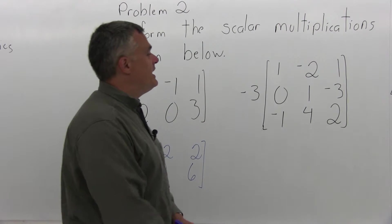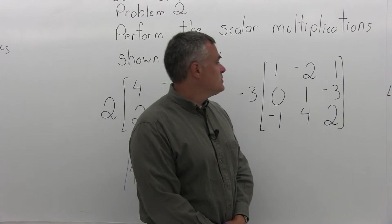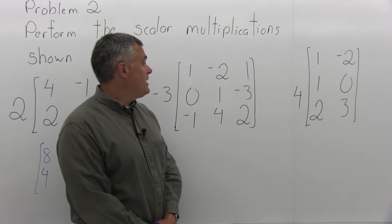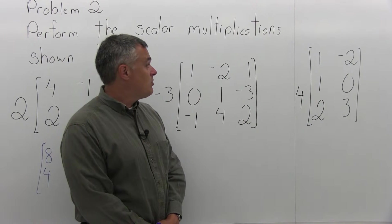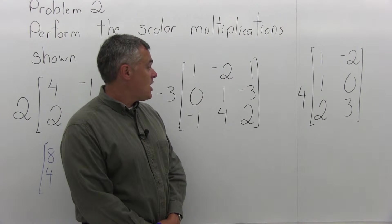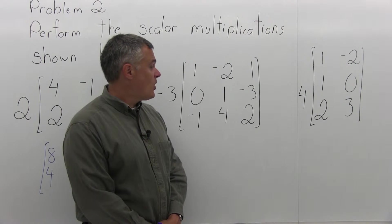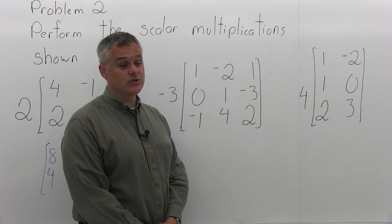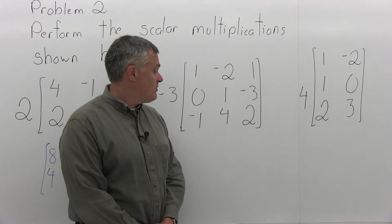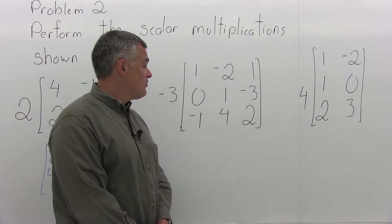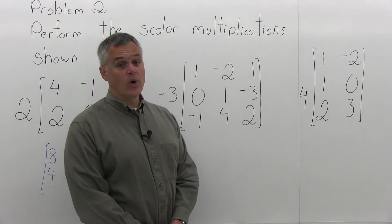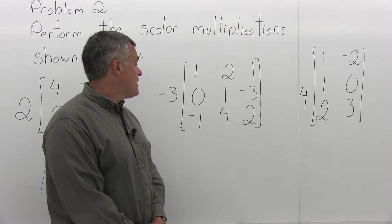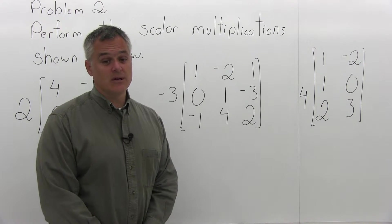Now the next matrix has 3 rows. There's 1, negative 2, positive 1 in the top row. 0, 1, negative 3 in the next row. And in the bottom row, negative 1, 4, 2. In front of that matrix is a negative 3.